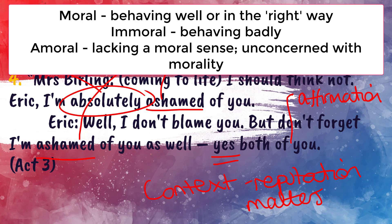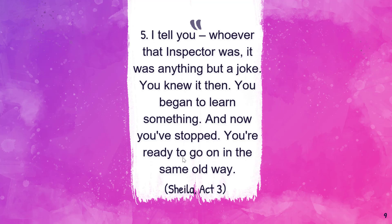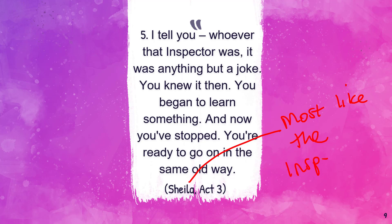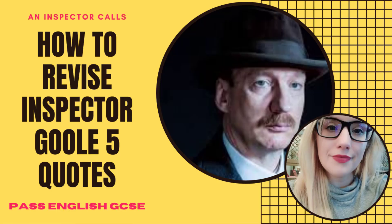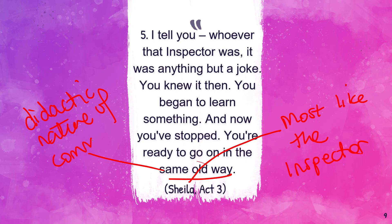Don't get confused with the word 'amoral,' which means not having a moral compass. These characters clearly have a sense of right and wrong and choose to be selfish. The final quote: 'I tell you, whoever that inspector was, it was anything but a joke. You knew it then, you began to learn something - and now you've stopped. You're ready to go on in the same old way.' This is Sheila - she is the character that changes the most, she is most like the inspector, and we know the inspector is Priestley's mouthpiece. There's something almost didactic here.